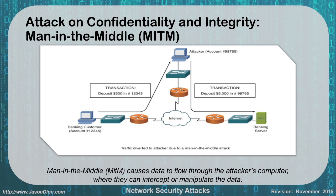A man-in-the-middle attack affects both confidentiality and integrity. In a banking example, a customer intends to send data to account 12345, but the man-in-the-middle intercepts and changes it to account 98765. The banking server processes the altered transaction, sending the money to the attacker's account. This is both a confidentiality attack — the attacker sees your account numbers — and an integrity attack, as the data is changed.